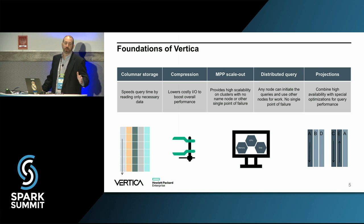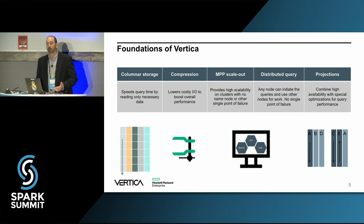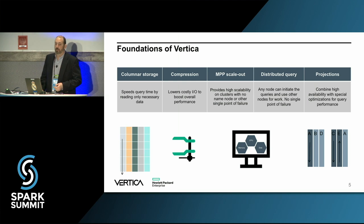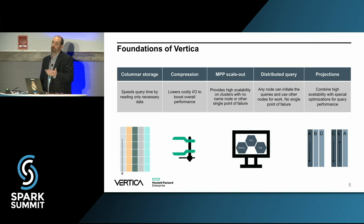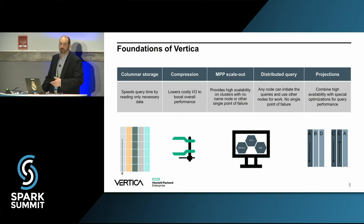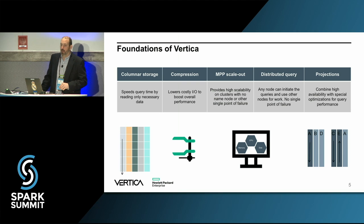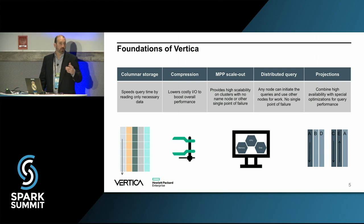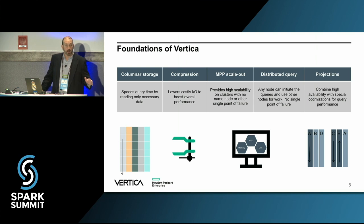Columnar storage is fantastic for reducing I/O — if you have 100 columns in your table but your query only uses three, you only incur the I/O overhead of three. We also have great compression and encoding, which further reduces I/O. We are massively parallel processing, queries are distributed well over all nodes of the cluster, and we have no single point of failure — we never have. Very high availability. Our data is stored in projections rather than traditional indexes or materialized views, and in a fully columnar database, projections work better than those other methods.